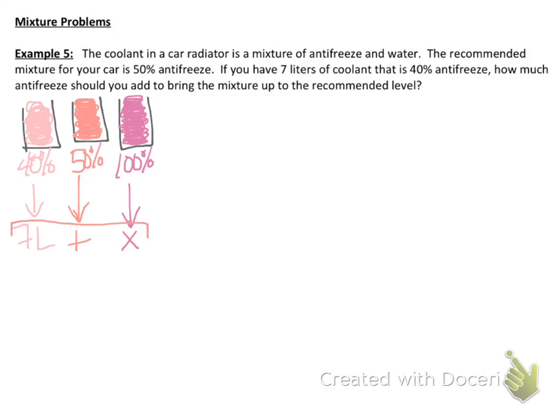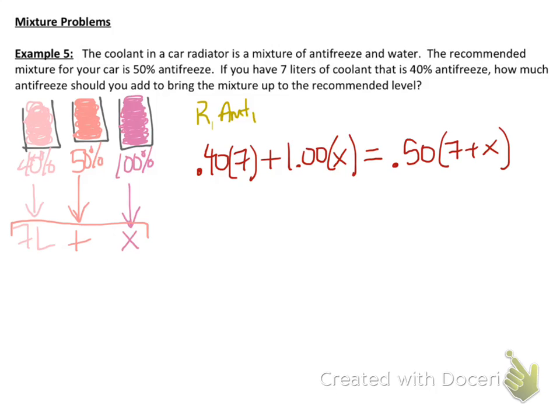So how do we put this in an equation? I've got 40% as a decimal is 0.4 times the amount that I have, plus I need to add the 100%, so that would be 1.00 as a decimal, times the amount of that that I need. And I need to end up with a 50% mixture, and the quantity is going to be that 7 liters of the 40%, plus the x liters of the 100%. This goes back to this model of the rate or the percentage times the amount, plus the rate times the amount is going to be the total mixture.